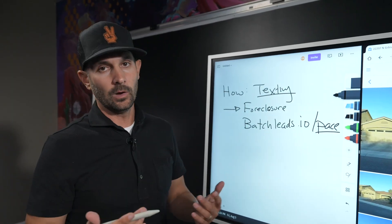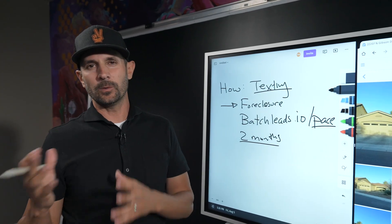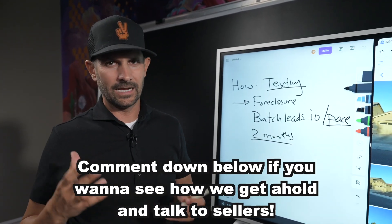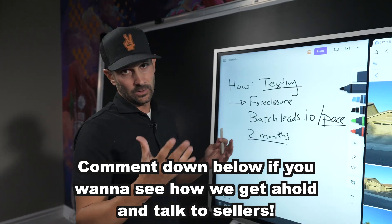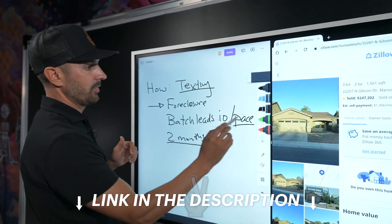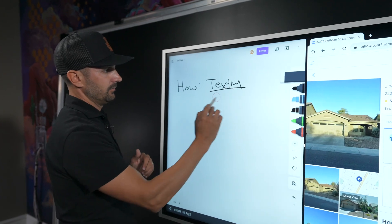The follow-up took about two months. If you guys want to know about scripting and what we script, make a comment down below. Maybe I'll make a video of like what exactly do we type to people and how do we get a hold of them. So we texted them utilizing batchleads.io. We literally texted them through the platform.